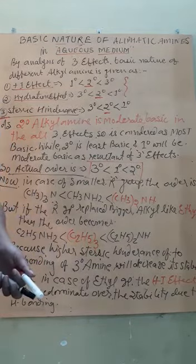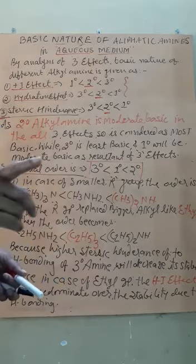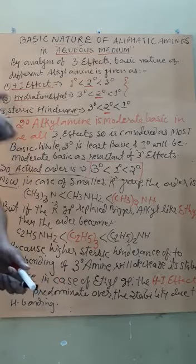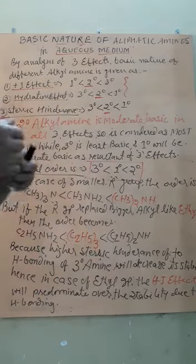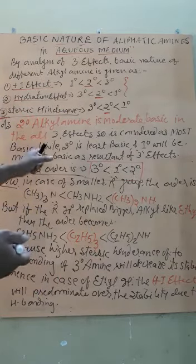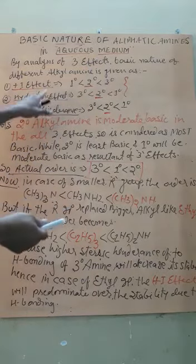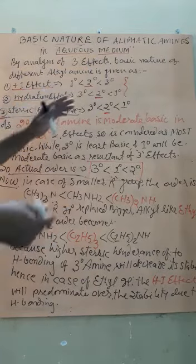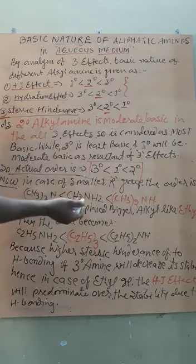One which has consistency, isn't it? That means the one who made 50 runs in each match will be considered as best batsman. Similarly here, the position of secondary amine with all the effects is in moderate position.